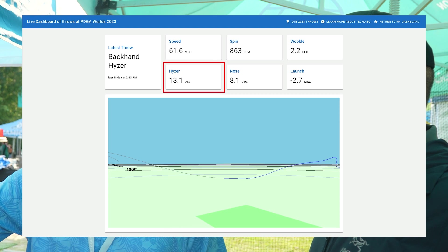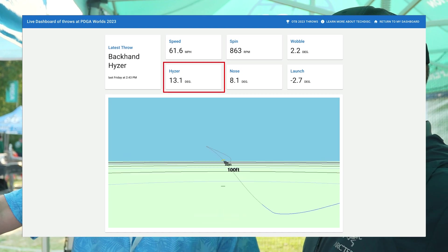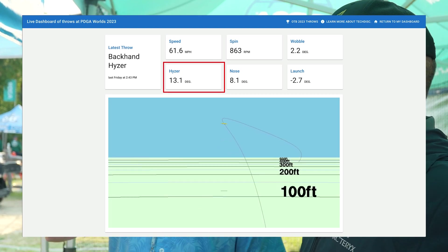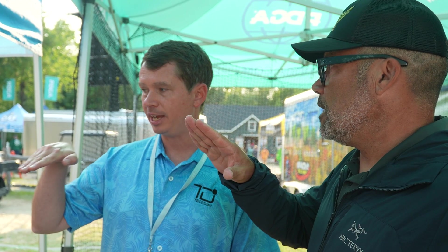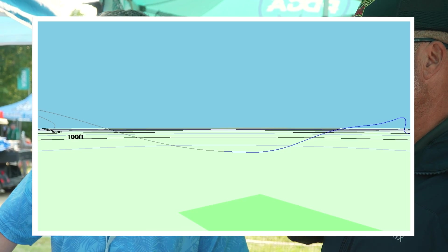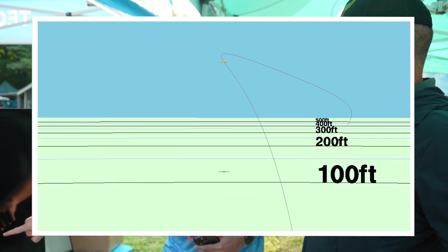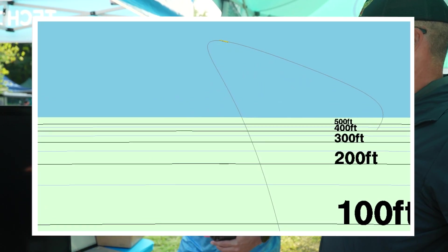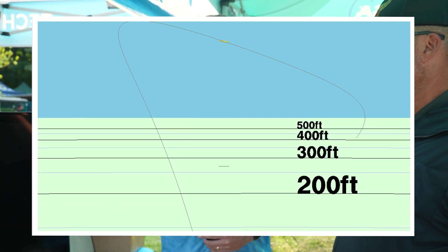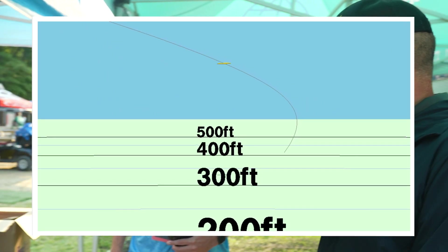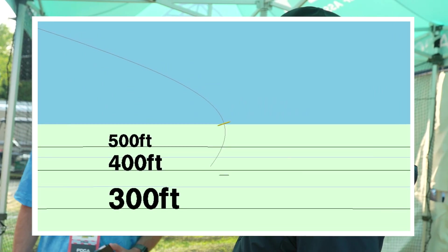13 degrees of hyzer, and here's what I'm looking at — your nose was up. You threw downhill a little bit with the nose up, so it's pushing like this. Let's look at the simulation. So that backswing — it's coming out, he throws it, pushes off like that. So I'm kind of like swooping a little bit?